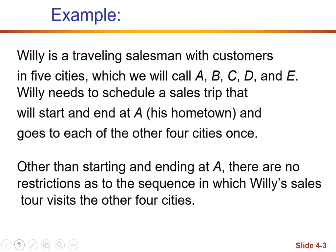Let's do an example. Willie is a traveling salesman with customers in five cities — A, B, C, D, and E. Willie needs to schedule a sales trip that will start at and end at A, which is his hometown, and he goes to each of the other four cities just once. Other than starting and ending at A, there are no restrictions as to the sequence in which Willie's sales tour visits the other four cities.